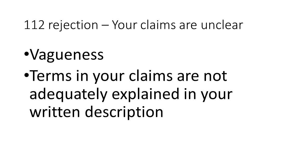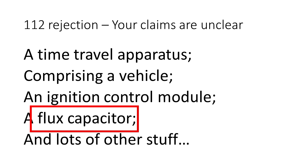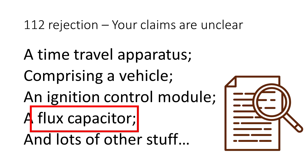A 112 rejection basically means your claims are unclear — sometimes called indefiniteness. For example, the terms of your claims are not well defined. Let's say we claim a time travel apparatus comprising a vehicle, an ignition control module, a flux capacitor, and other components. Now, if a flux capacitor is not a well-known scientific term and it is not explained or defined adequately in the written portion of our patent application, then the patent office may issue a 112 rejection in that case.